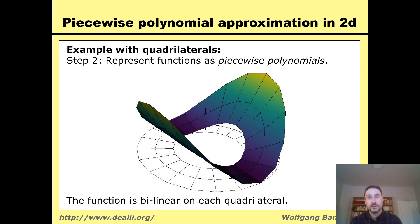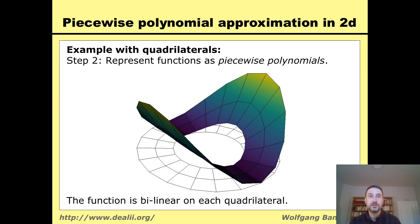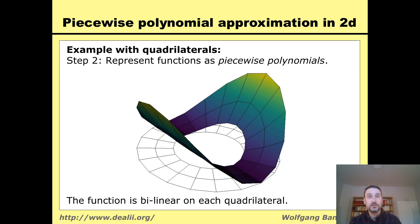Bilinear means it is linear in x and in y separately. So I have a continuous function that approximates x squared. Of course it is not exactly equal to x squared — you can see that this surface has kinks and creases. But it is not very difficult to believe that if I make these cells smaller and smaller, I can make the approximation about as good as I want.